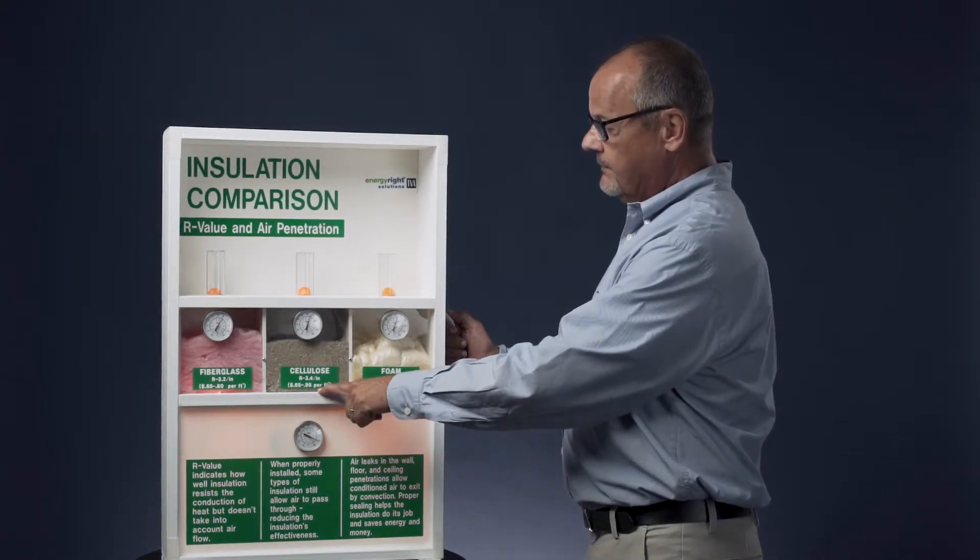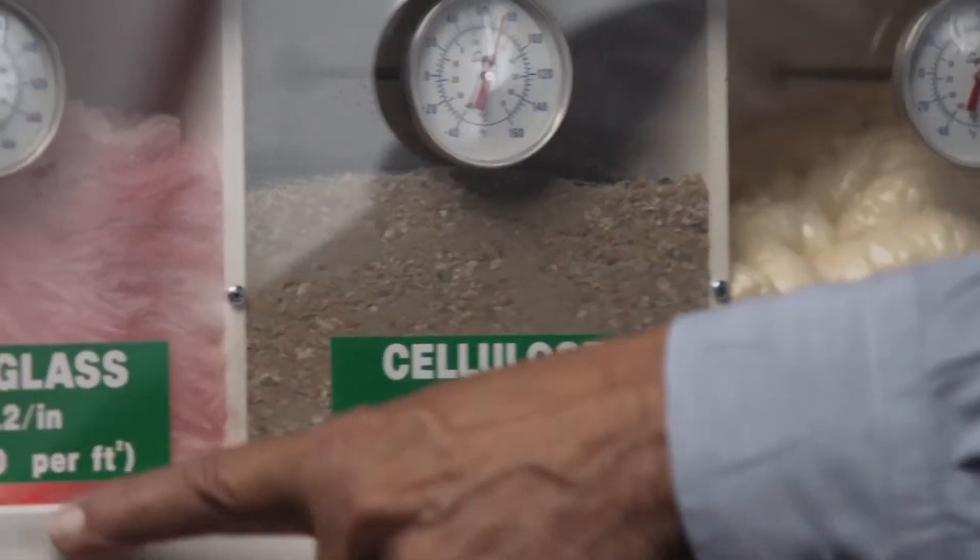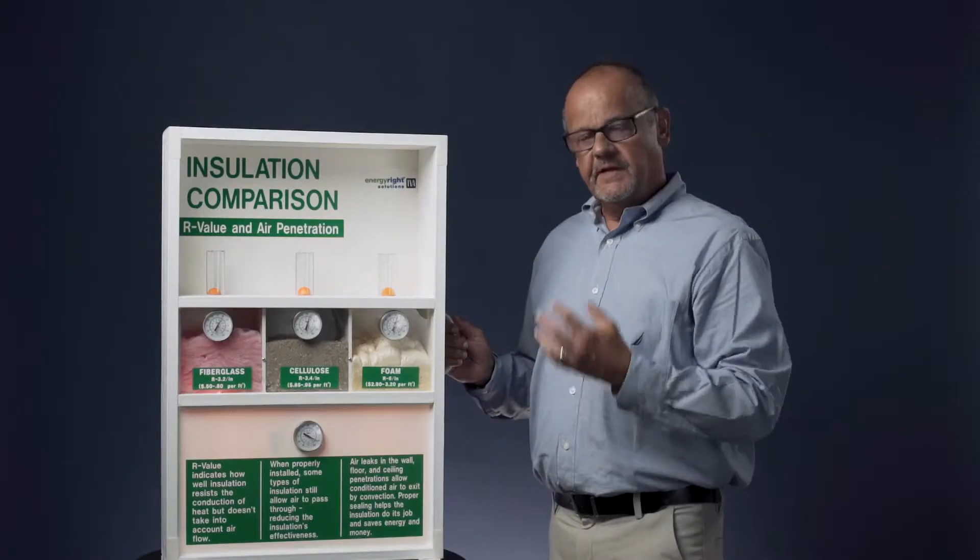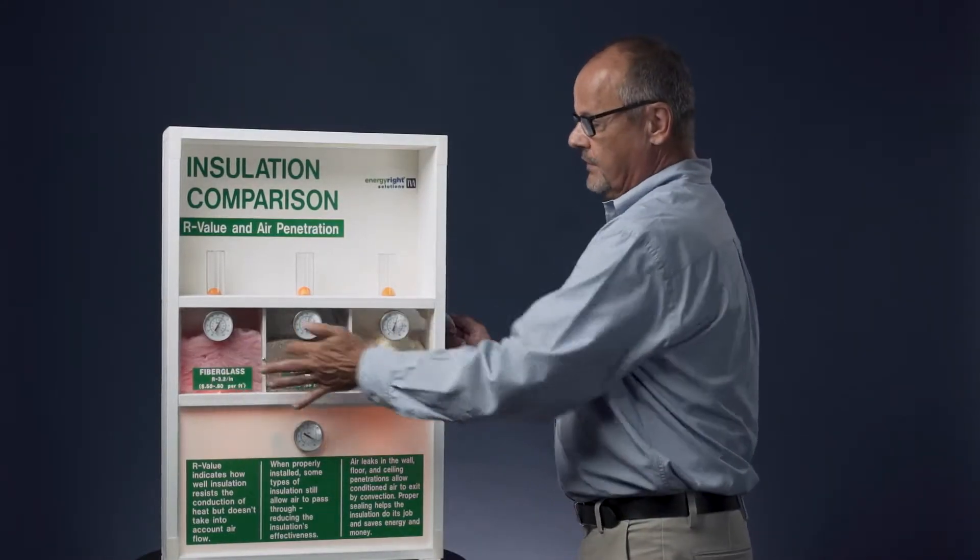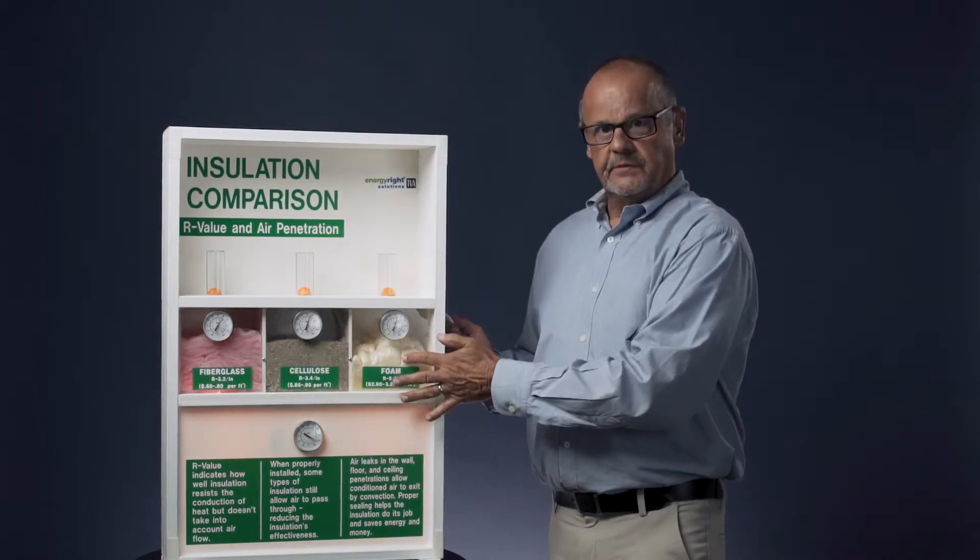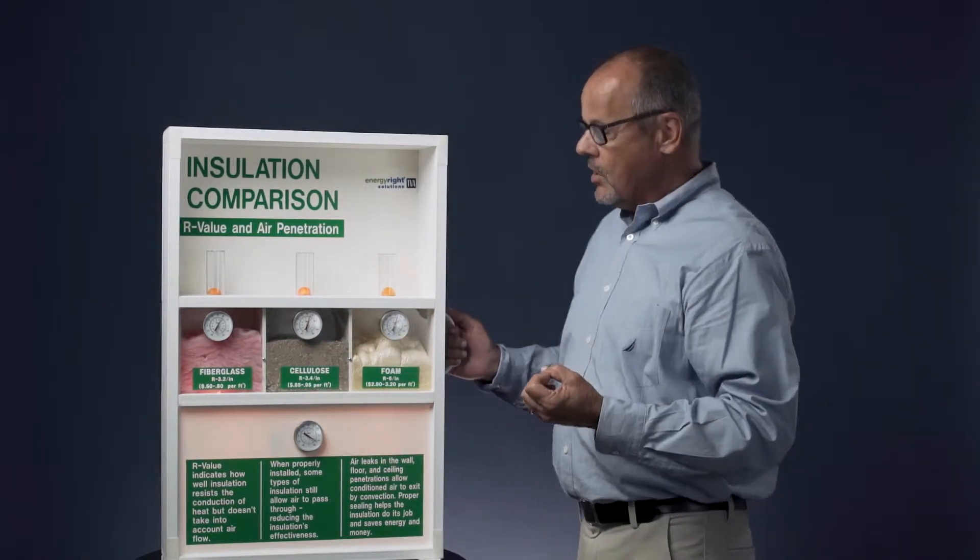Cellulose is 3.4 per inch. Fiberglass is 3.2 per inch. So that just simply means that you have to have more of these two than this one to achieve your R33 or R38.